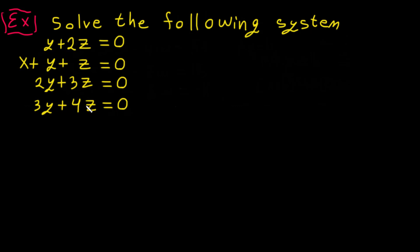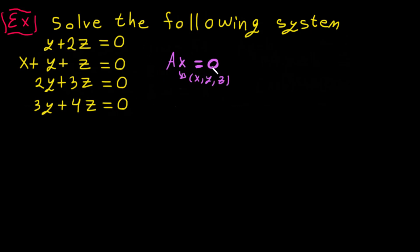In this video we are solving a homogeneous system. It is called homogeneous because the result of these equations are zero. You can write it like Ax = 0, where A is the coefficient matrix and x is the vector of variables x, y, z. The answer equals the zero vector. We can write it in the convenient way like this.